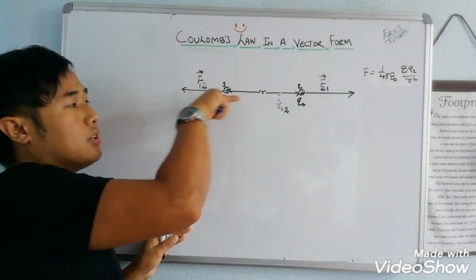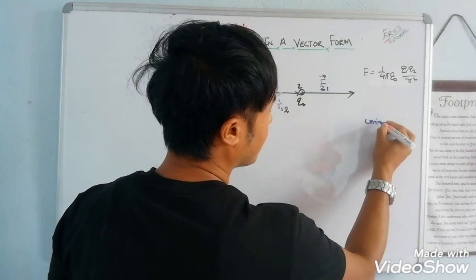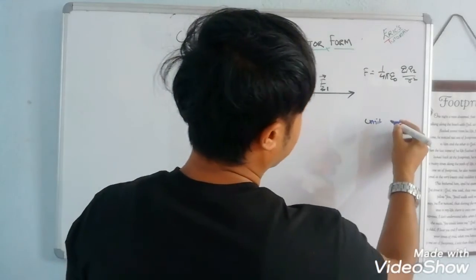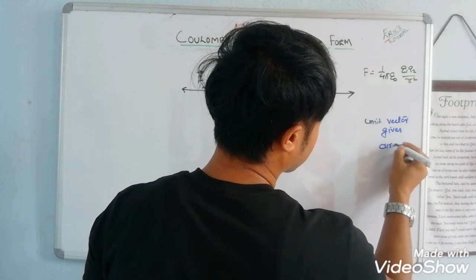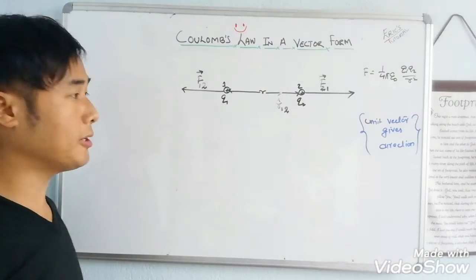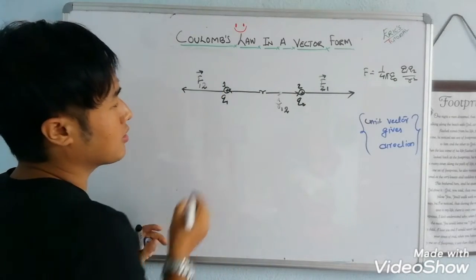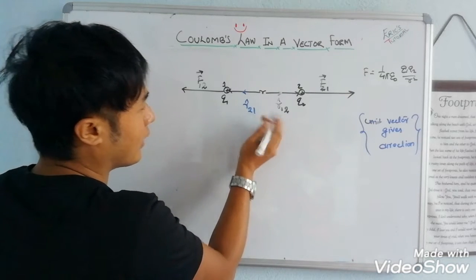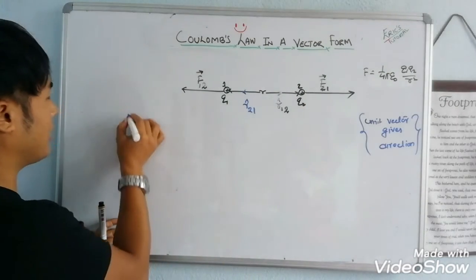The force direction is given by the unit vector. Unit vector gives direction. R cap 1,2. R cap 2,1. Unit vector gives the same direction. Exactly the same. Q1 experiences force from Q2. Its direction is the opposite. The unit vector for that direction is R cap 2,1. 2 to 1 direction.